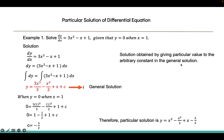Let us revisit the definition of particular solution. We can see that by giving a particular value to the arbitrary constant C — in this case C = -3/2 — we obtain the particular solution. Whereas when we retain the arbitrary constant C, it is known as the general solution.